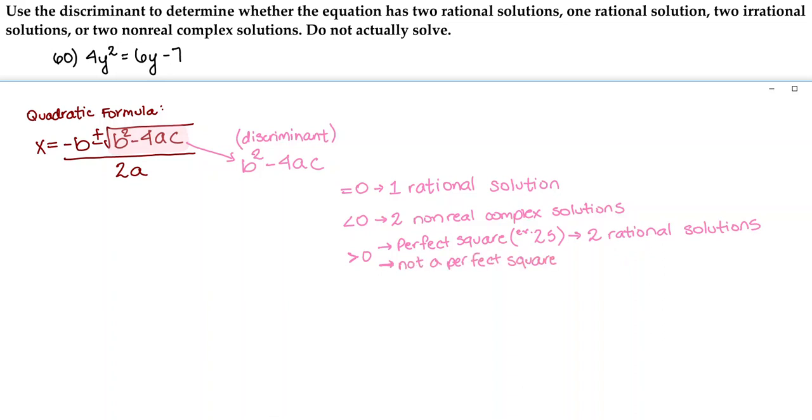If the discriminant is greater than 0 but not a perfect square — for example, 7 — then you'll have two irrational solutions.